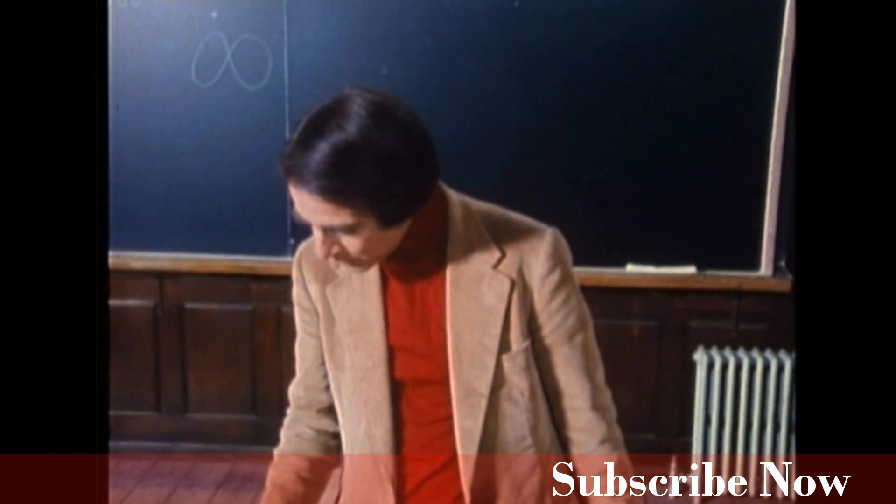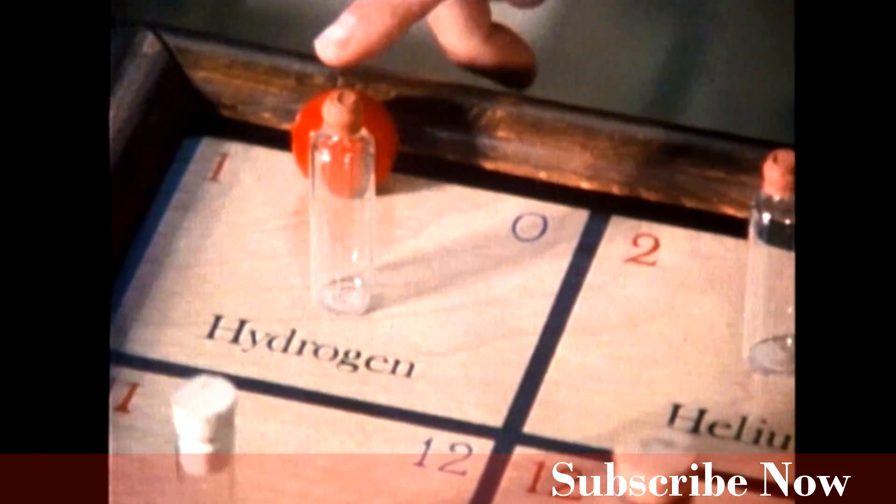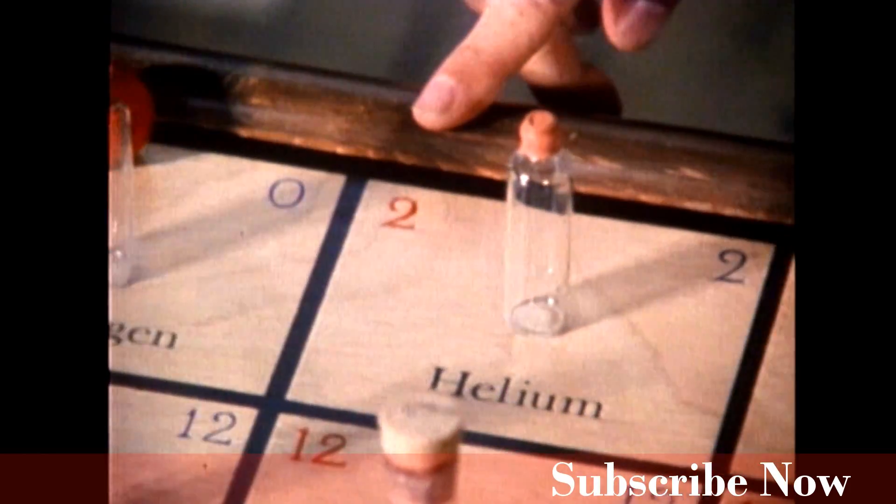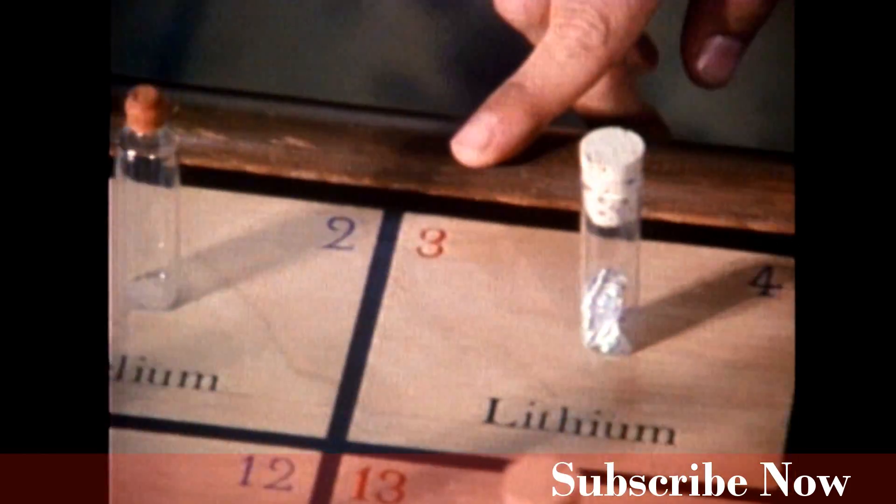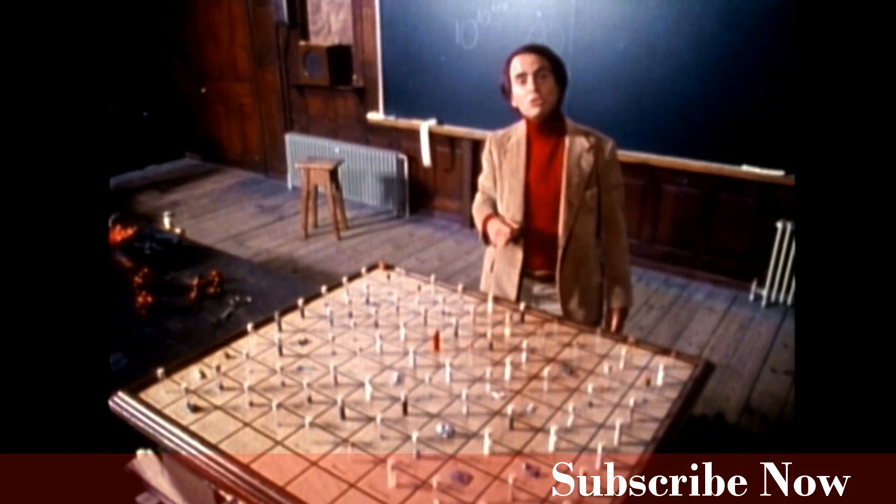If you're an atom and you have just one proton, you're hydrogen. Two protons, helium, three lithium, and so on, all the way to 92 protons, in which case your name is uranium.